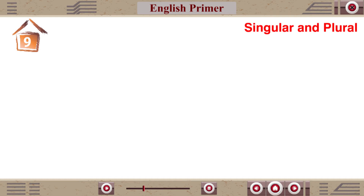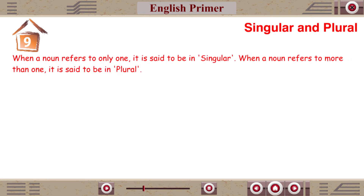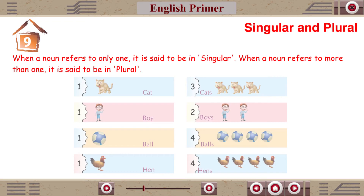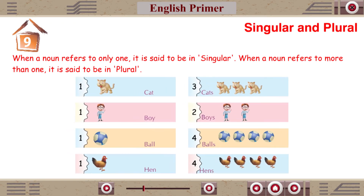Singular and Plural. When a noun refers to only one, it is said to be in singular. When a noun refers to more than one, it is said to be in plural. One cat, three cats. One boy, two boys.